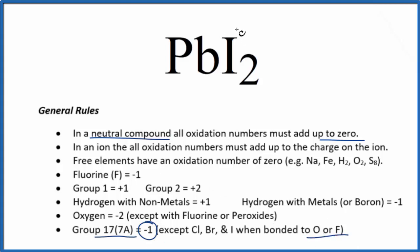So if each iodine here is minus one, two times minus one, that's minus two. In order to have it all add up to zero, the lead has to be a plus two.